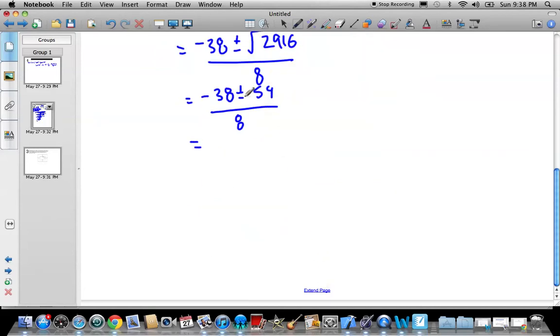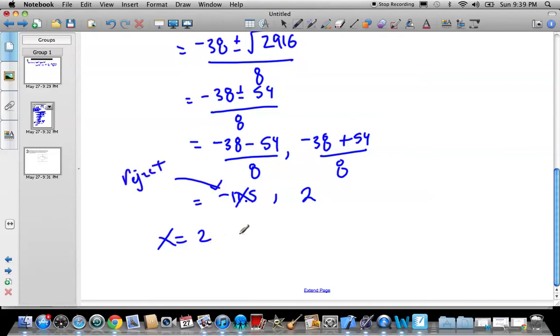All right, so now we just got to do the math on this. So negative 38 minus 54 all over 8, and then we're going to have negative 38 plus 54 all over 8. Negative 38 subtract 54 divided by 8, so that's negative 11.5. And we're hoping for a good number here, and 38 negative plus 54, and it works out beautifully, plus 16 divided by 8 is 2. So that simply means that x equals 2, this is extraneous or reject. x equals 2, that is our solution.